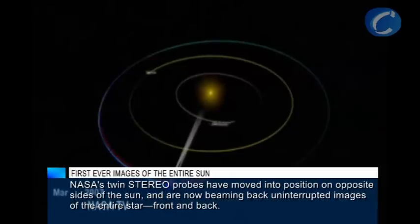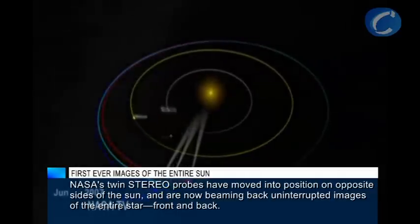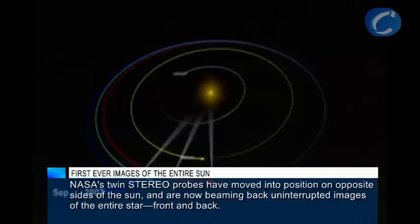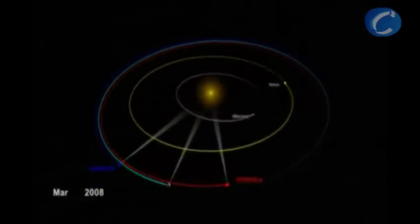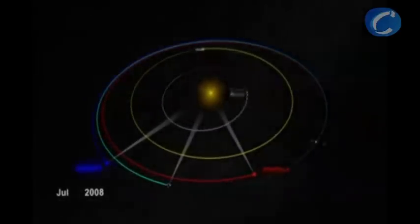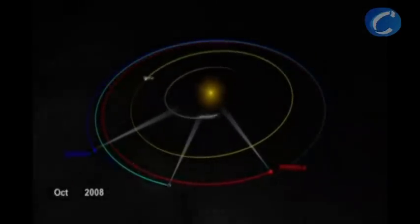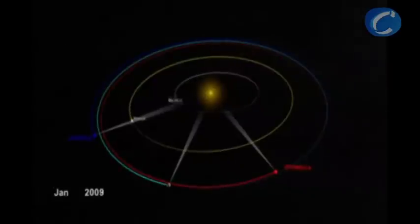In 2006, NASA launched the Solar Terrestrial Relations Observatory, or STEREO spacecraft. Over the last four years, the two spacecraft have slowly made their way along Earth's orbit, with STEREO A advancing ahead and STEREO B falling behind. As they've separated, our view of the Sun has increased.